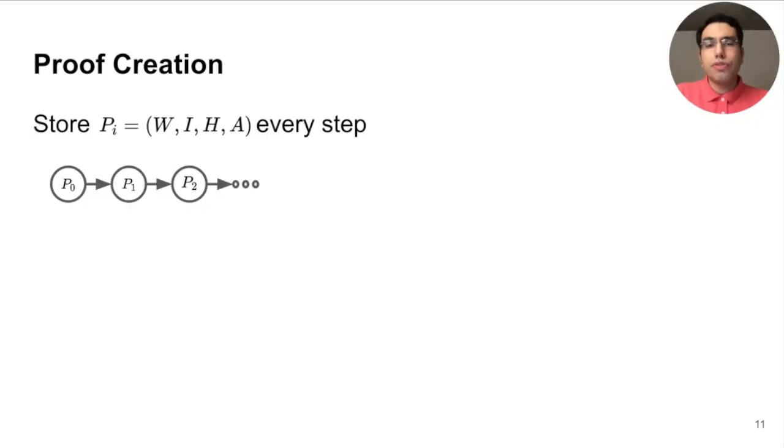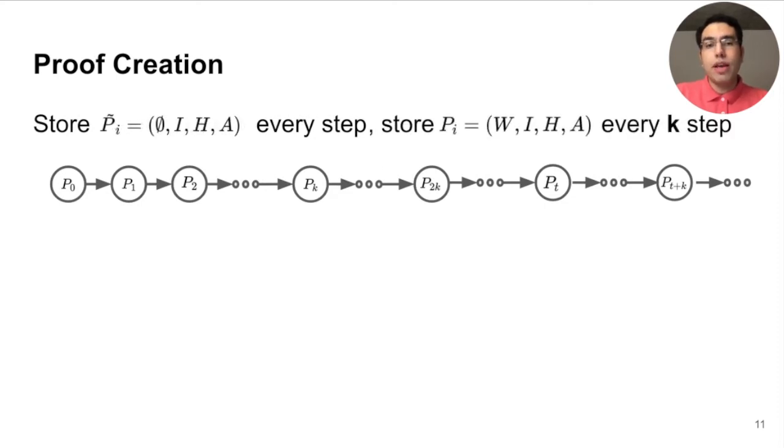So, we saw that the proof creation is equivalent to recording the chain of updates. However, if all the links are recorded in the proof, the size of the proof would become prohibitively large. So, instead, the prover can record the weights only every k steps and leave them out everywhere else. So, P_0 is recorded, then the weightless proof P_2L1, then P_2L2, until P_k, where the full proof is again recorded. From here on, we simplify our diagrams by replacing all the P_2Ls with this arrow. Finally, this is done for every epoch of the training.